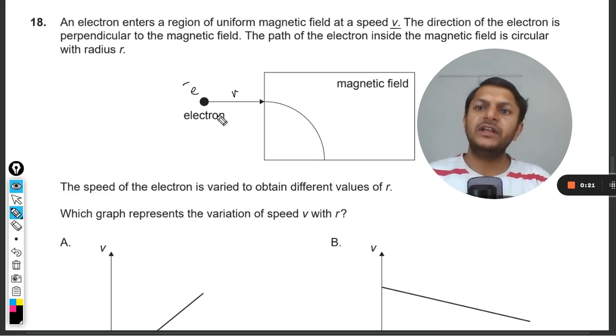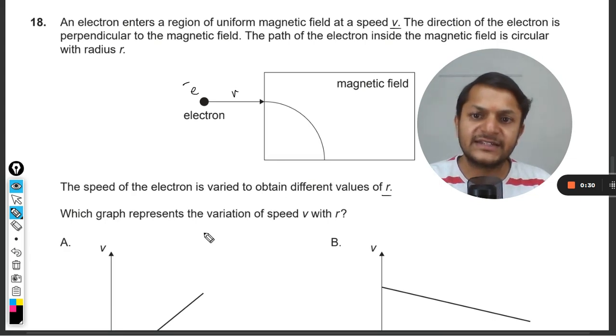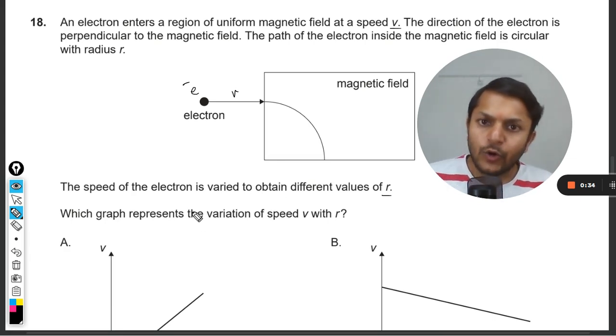The speed of the electron is varied to obtain different values of r. Which graph represents the variation of the speed v with respect to r? So what do we do in this kind of question is you first try to understand the setup.